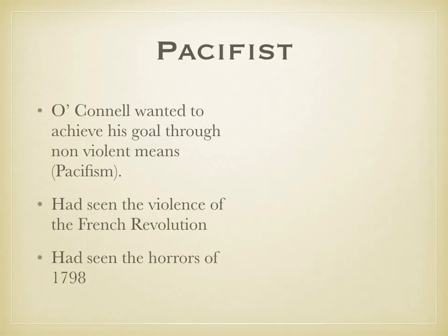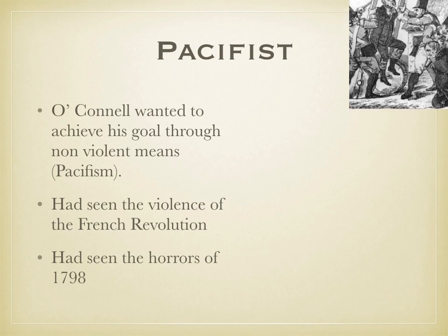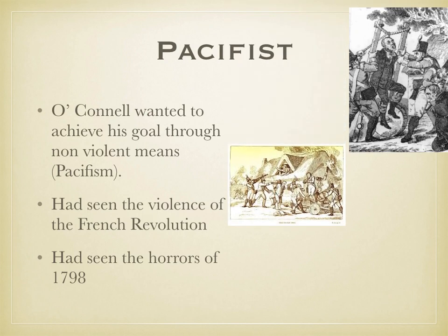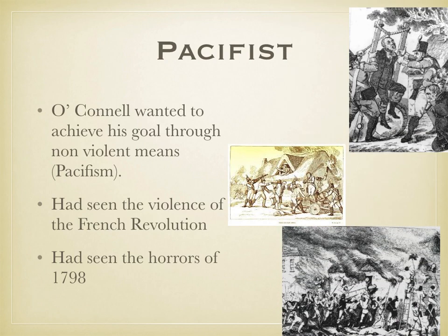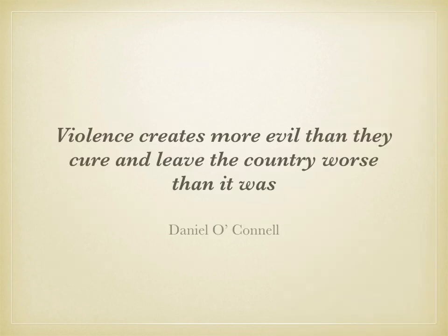O'Connell had a very clear and specific idea of how he wished to achieve this goal. O'Connell was a pacifist, meaning that he didn't believe in using violence to achieve his goals. He had been in France in 1793 and seen the violence that led to the execution of Louis XVI. He had seen the horrors of the 1798 rebellion, from the terror of General Lake to the sectarian violence of the Defenders, the Orange Order, and the reprehensible massacres at Scullabogue and Wexford Bridge, and he believed that violence creates more evils than the cure and leaves the country worse than it was.